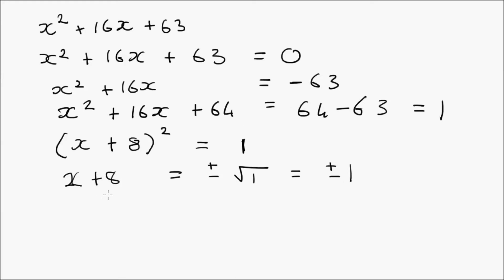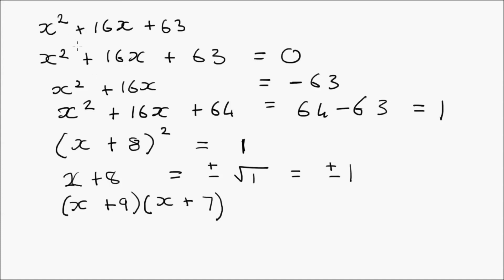For the first factor, we bring the negative 1 across and it becomes a plus: x plus 8 plus 1 equals x plus 9. For the other factor, we bring the positive 1 across and it becomes a negative: x plus 8 minus 1 equals x plus 7. So x squared plus 16x plus 63 factors as x plus 9 times x plus 7. Checking: x by x is x squared, x by 7 plus 9x is 16x, and 9 multiplied by 7 is 63.